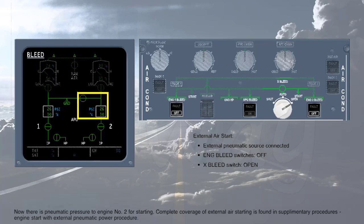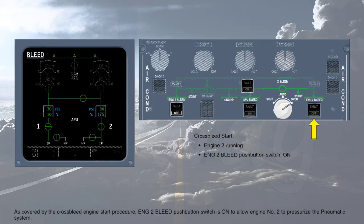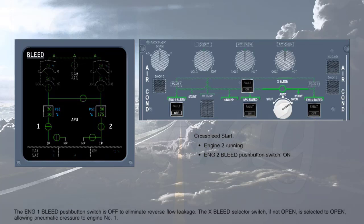Complete coverage of external air starting is found in Supplementary Procedures — Engine Start with External Pneumatic Power Procedure. After engine number 2 is started by ground pneumatics, the procedure is to start engine number 1 by cross-bleed start after all ground equipment is removed. As covered by the cross-bleed engine start procedure, engine 2 bleed push-button switch is on to allow engine number 2 to pressurize the pneumatic system. The engine 1 bleed push-button switch is off to eliminate reverse flow leakage. The cross-bleed selector switch, if not open, is selected to open, allowing pneumatic pressure to engine number 1.